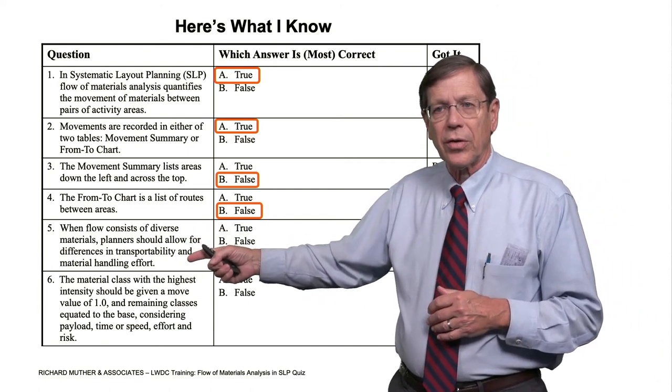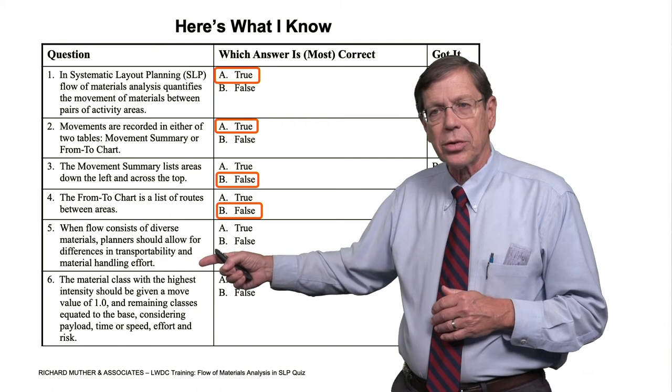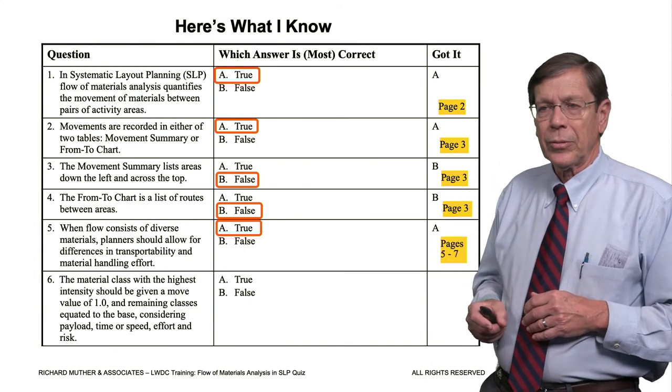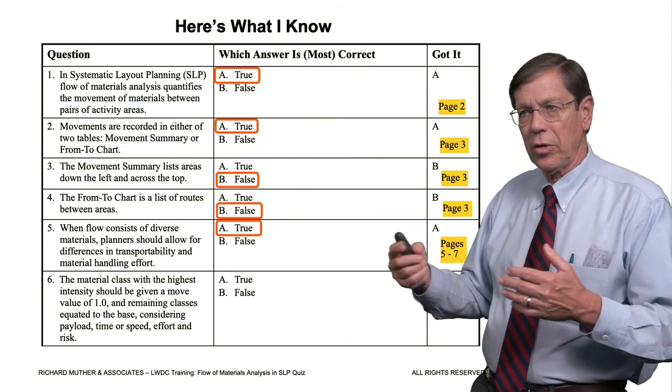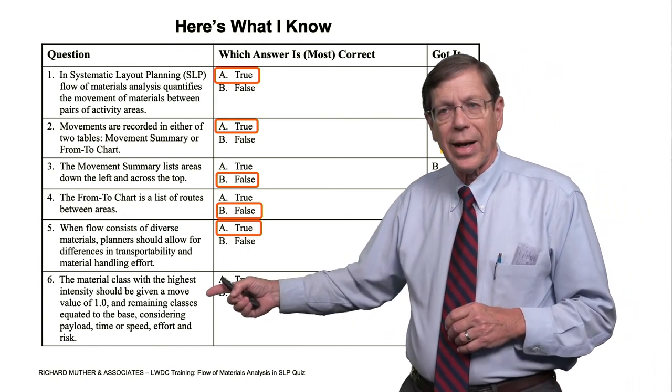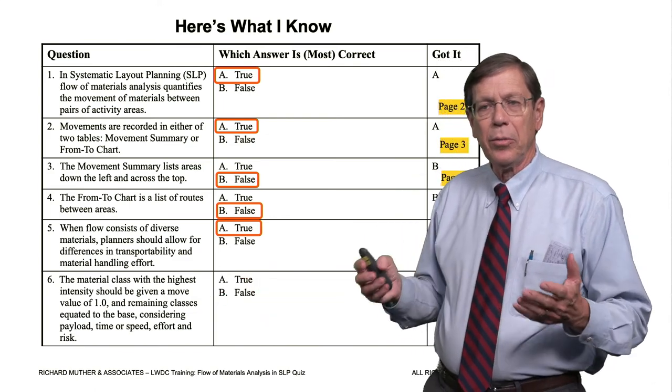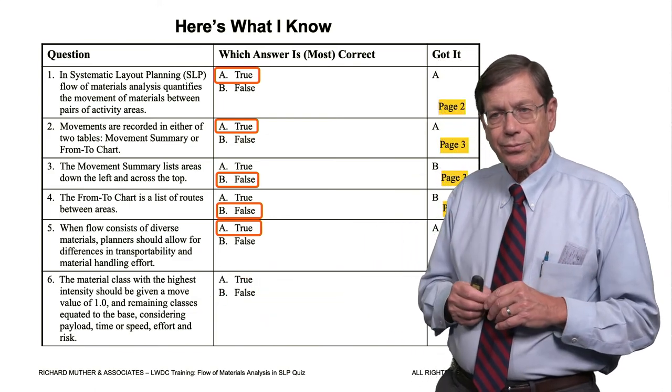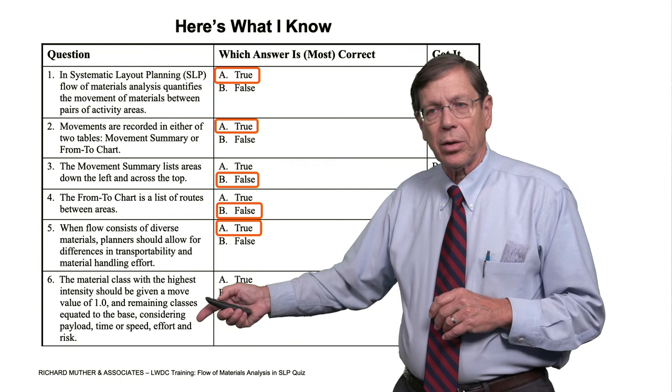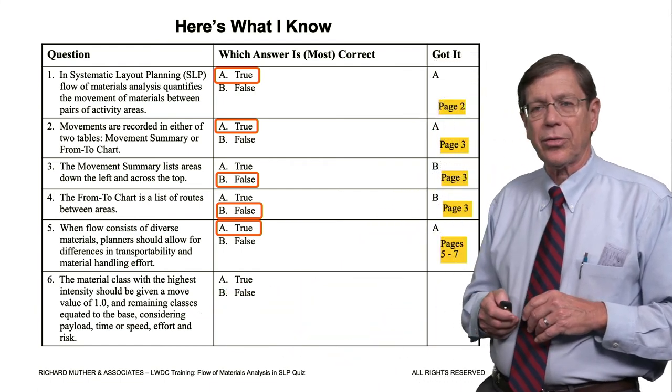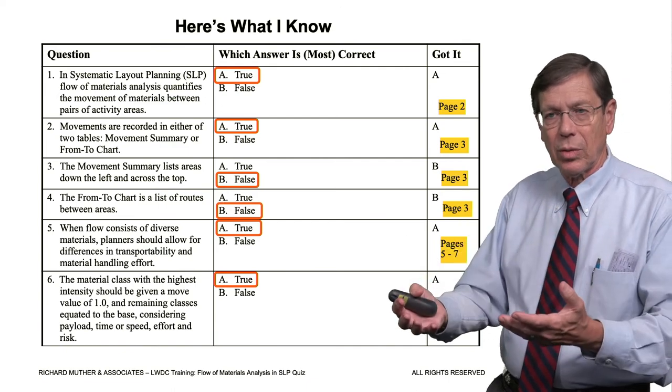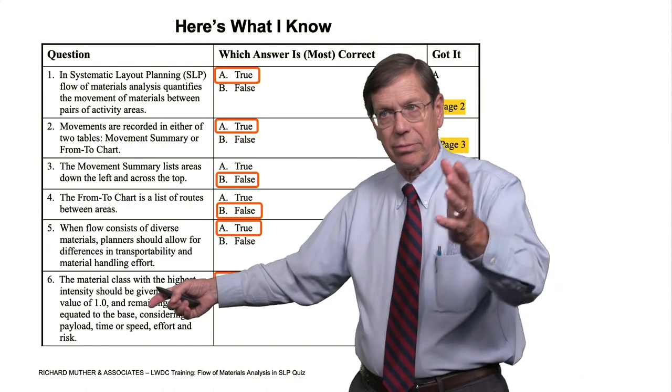When flow consists of diverse materials, planners should allow for differences in transportability and material handling effort. True. You need to equate these things. A move is not a move if it's a really difficult move or very slow or demanding. The material class with the highest intensity should be given a move value of one. And remaining classes equated to the base, considering payload, time or speed, effort and risk. That's true. That's what, if you're going to use this technique rather than kilograms.